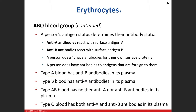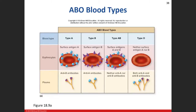To review: type A blood has anti-B antibodies in its plasma. Type B blood has anti-A antibodies. Type AB has both surface antigens, so it cannot have anti-A or anti-B antibodies. Type O has no surface antigens, so it can have both anti-A and anti-B antibodies. Your own antibodies will not attack your own cells — it's when you get the wrong blood in a transfusion that we run into a problem.